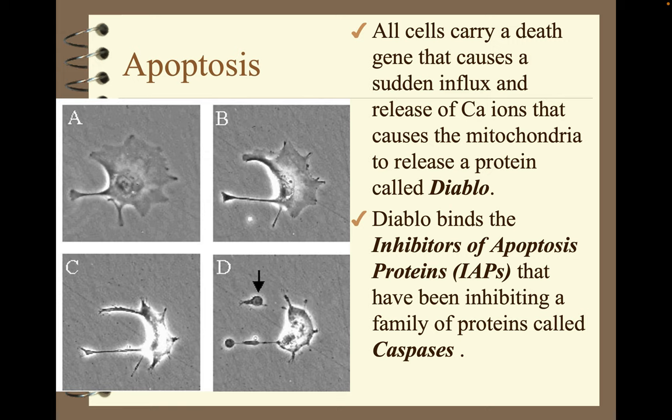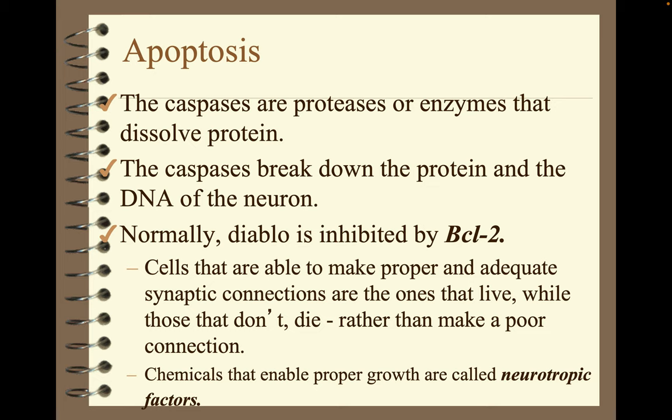Diablo binds the inhibitors of apoptosis proteins, or IAPs, that have been inhibiting a family of proteins called caspases. The caspases are proteases — enzymes that dissolve protein — and they break down the protein in the DNA of the neuron. Normally, Diablo is inhibited by BCL2. Cells that are able to make proper and adequate synaptic connections are the ones that live, while those that don't die rather than make a poor connection. Chemicals that enable proper growth are called neurotrophic factors.